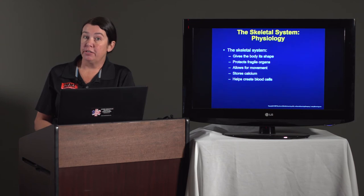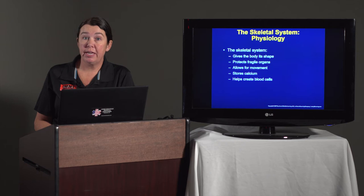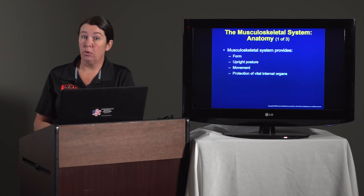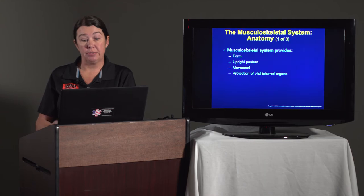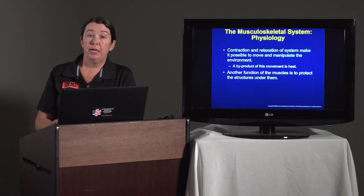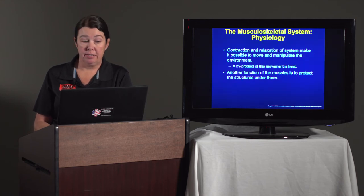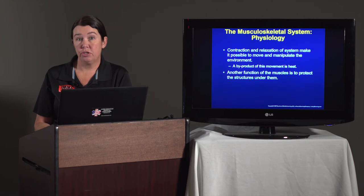The skeletal system gives the body its shape, protects fragile organs, allows for movement, stores calcium, and makes blood cells. The musculoskeletal system provides form, upright posture, movement, and protection of internal vital organs. There are three types of muscle: skeletal or voluntary muscle, smooth or involuntary, and cardiac muscle, which we call myocardium. Contraction and relaxation of the system make it possible to move and manipulate your environment. A byproduct of this movement is heat, and another function of the muscles is to protect the structures underneath them.